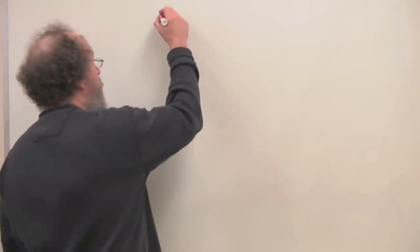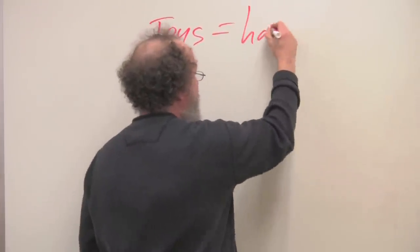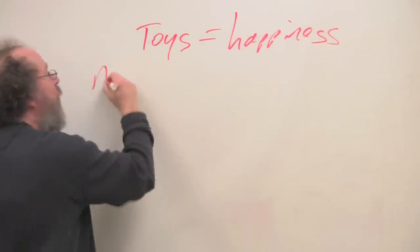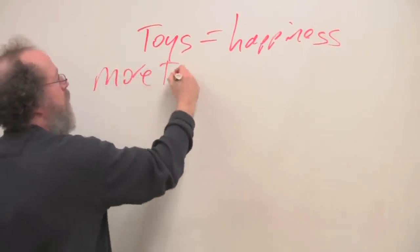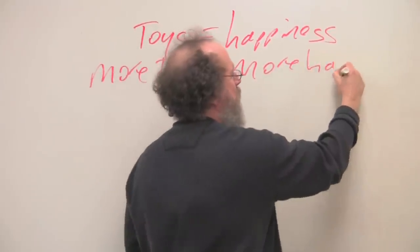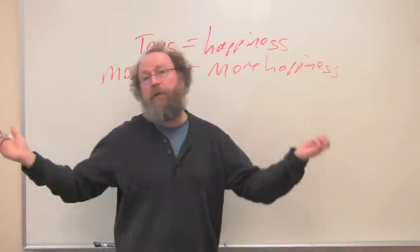Orthodox economists, neoclassical economists have a very simple model of happiness. And the model rests like this. Toys equals happiness. More toys equals more happiness. The more you have, the happier you'll be.